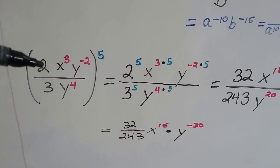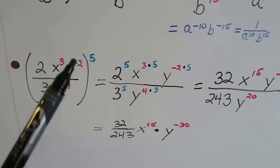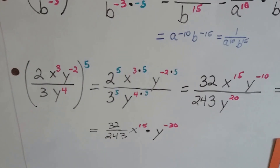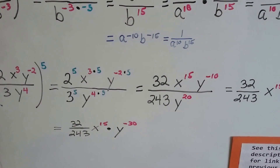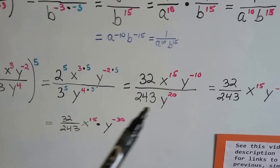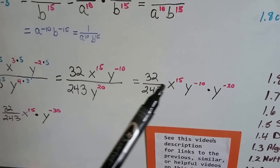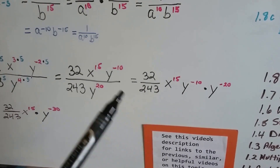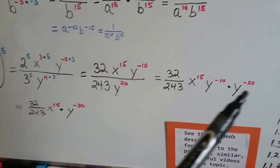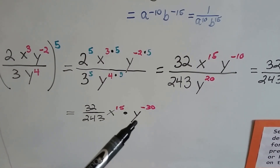In this one, we're going to multiply each of the factors by this 5. So we have 2 to the 5th, x, and that's a 3 times 5, the y and that's a negative 2 times 5. And that's going to be over 3 to the 5th, and y to the 4th power times the 5. When we simplify it, 2 to the 5th power is 32, and 3 to the 5th power is 243. This is 15. We've got a negative 10 here, and we've got a 20 down here in the denominator. Because we can turn this into a negative 20 and write it next to the other ones, that means we end up with y to the negative 10th times y to the negative 20th. When we combine like terms, we get a negative 30. So we can say this is our answer: 32 over 243, x to the 15th times y to the negative 30.